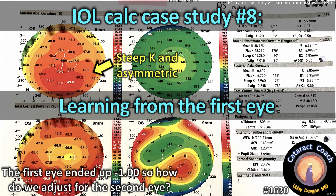CataractCoach.com IOL Calc case study number eight: learning from the first eye. The first eye ended up minus one, so how do we adjust for the second eye?